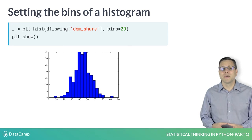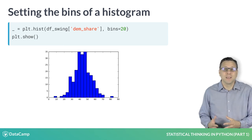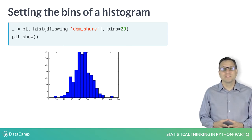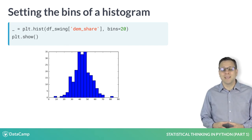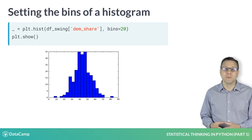You can also specify the number of bins — say 20 — using the bins keyword argument, and Matplotlib will automatically generate 20 evenly spaced bins.